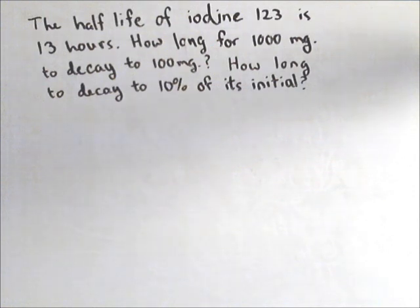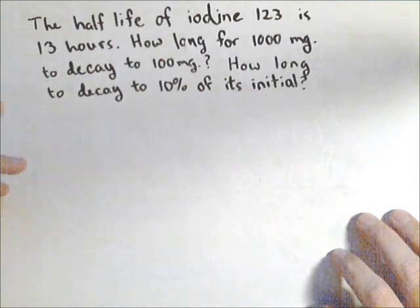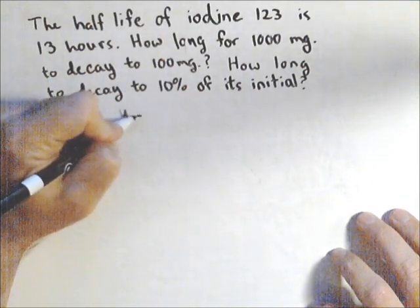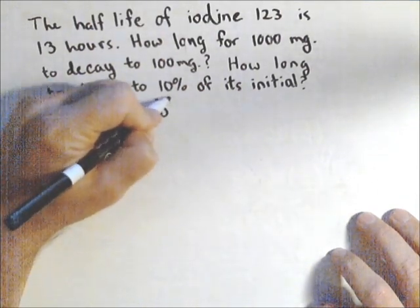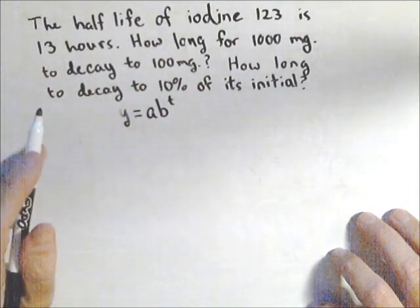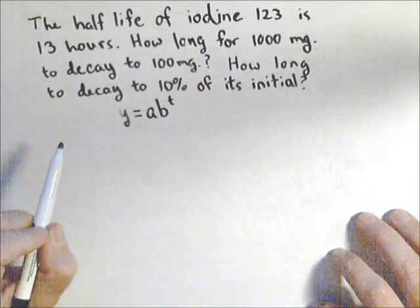So we're gonna look at the isotope of iodine-123, which has a half-life of 13 hours. I'm gonna use this form of the model, Y equals AB to the T, and it's really slick how we can use half-life to build the model.